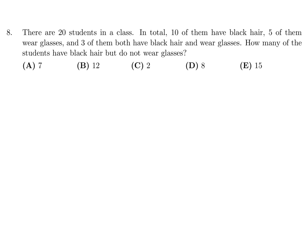There are 20 students in a class. In total, 10 of them have black hair, 5 of them wear glasses, and 3 of them both have black hair and wear glasses. How many of the students have black hair but do not wear glasses? We have 20 students, and we have 10 that have black hair, and then the other 10 have some other color hair. And then of the 20 students, we have 5 that wear glasses, and of those 5 that wear glasses, 3 of them have both black hair and wear glasses. So black hair can be split up into 3 and 7. 3 that have glasses and 7 that have no glasses. So 7 students have black hair but do not wear glasses. So that would be A.